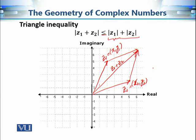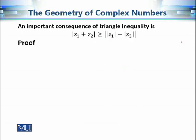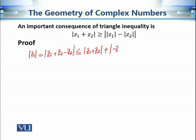The next property provides a lower bound on the modulus of the addition of two complex numbers. Using the triangle inequality, we can prove this in a simple way. Starting from |z1|, we write it as |z1 + z2 − z2|. By the triangle inequality, this is ≤ |z1 + z2| + |−z2|. Since |−z2| = |z2|, this implies |z1| − |z2| ≤ |z1 + z2|.